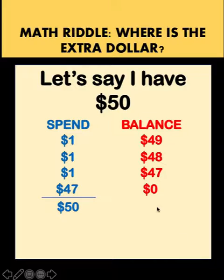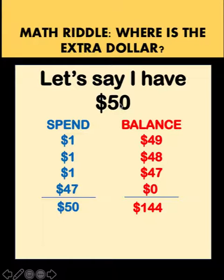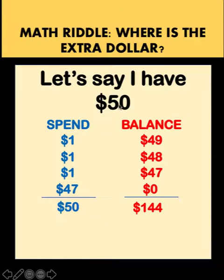But notice that in the balance column, the total would be $144, which is clearly way more than the $50 that I have. So this means that adding the spend column will always result in the amount I started with, but it is meaningless for us to add the balance column. This will not always total to $50.